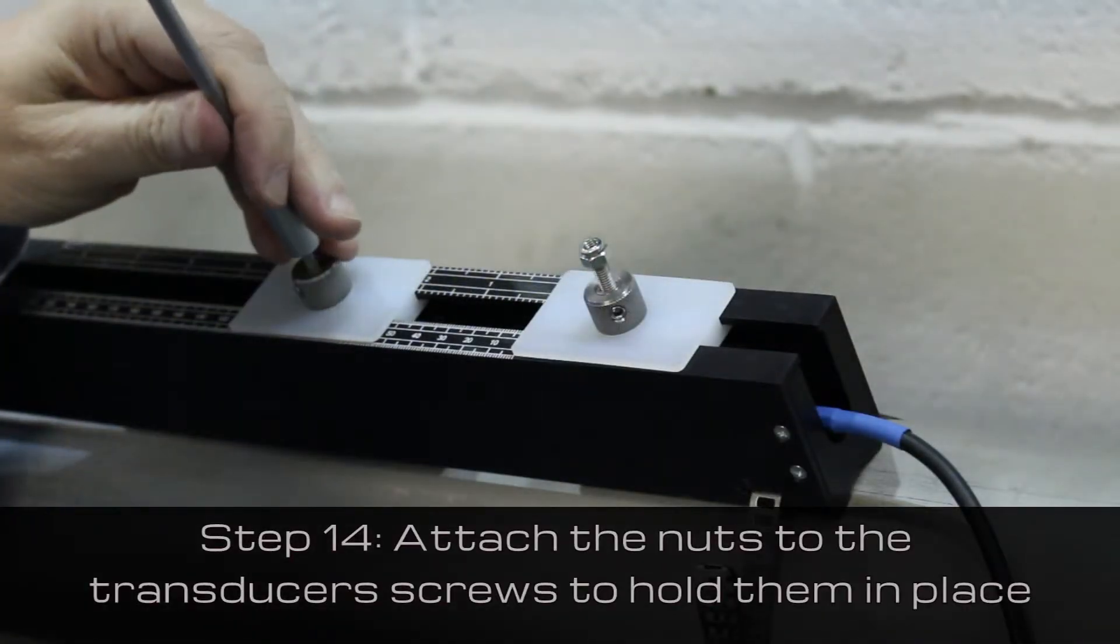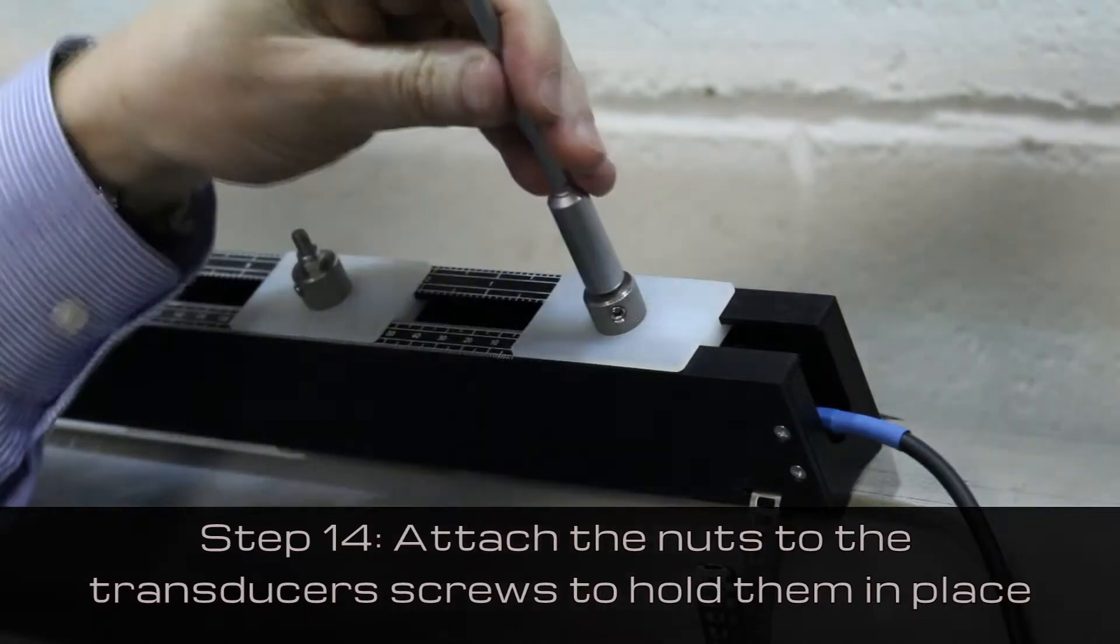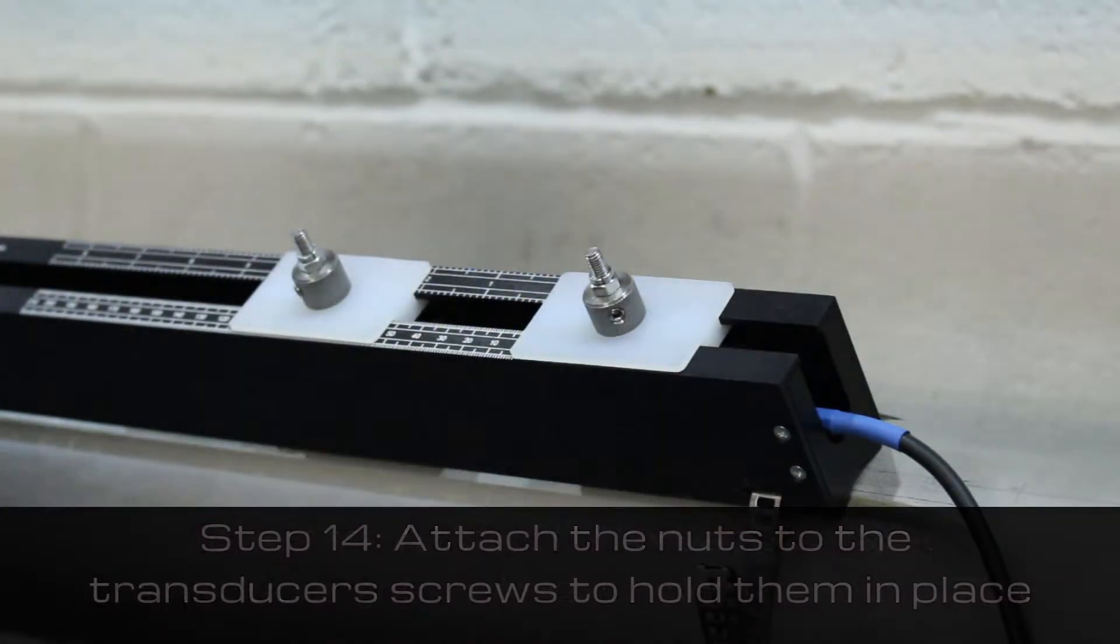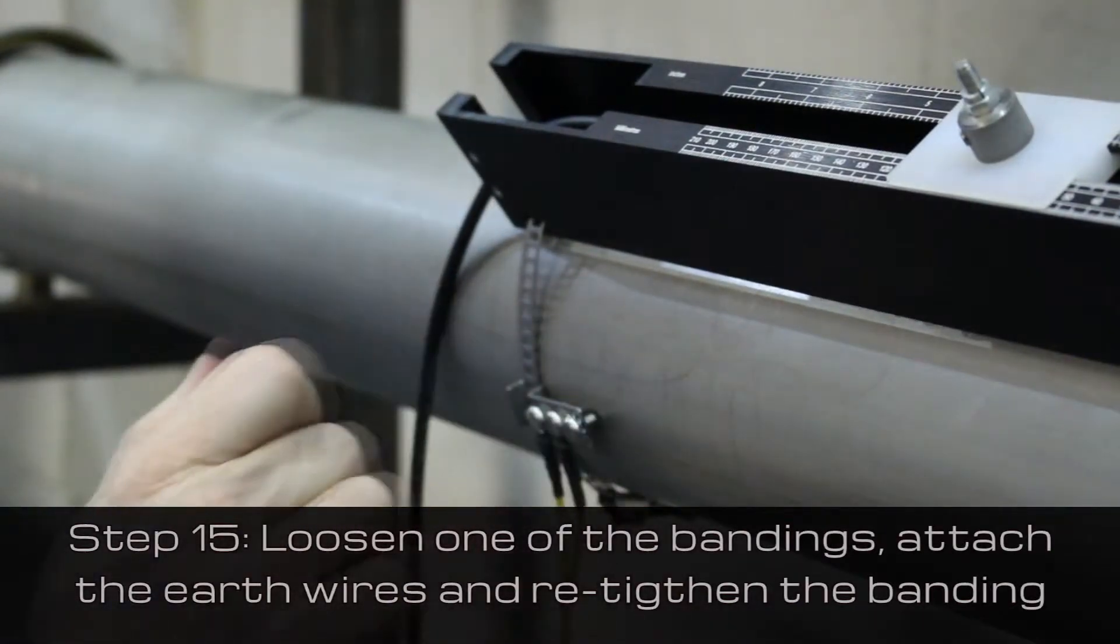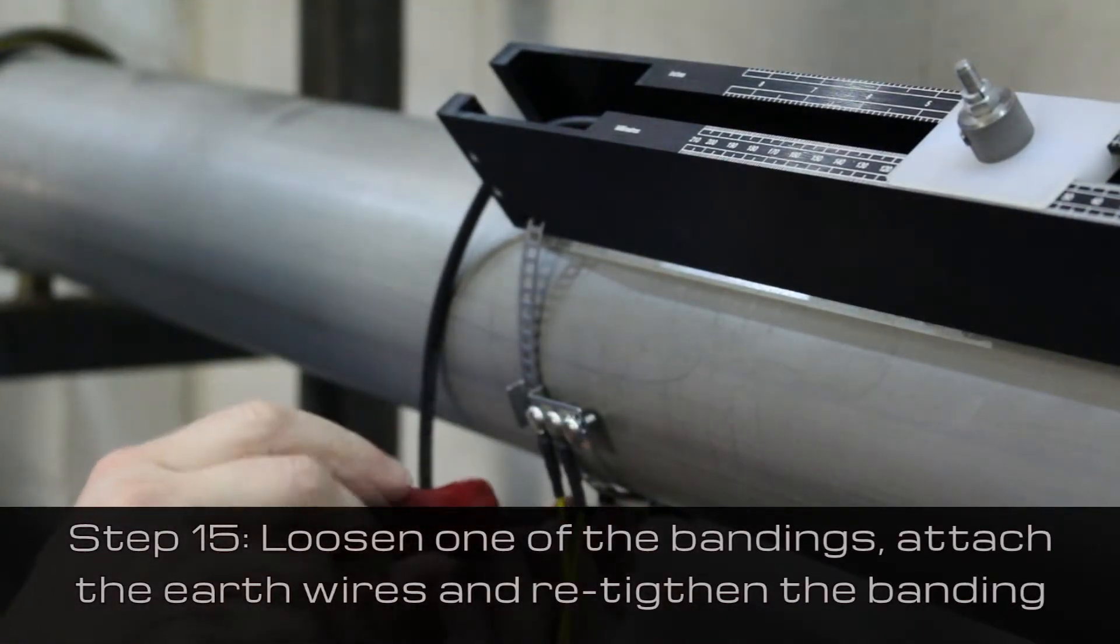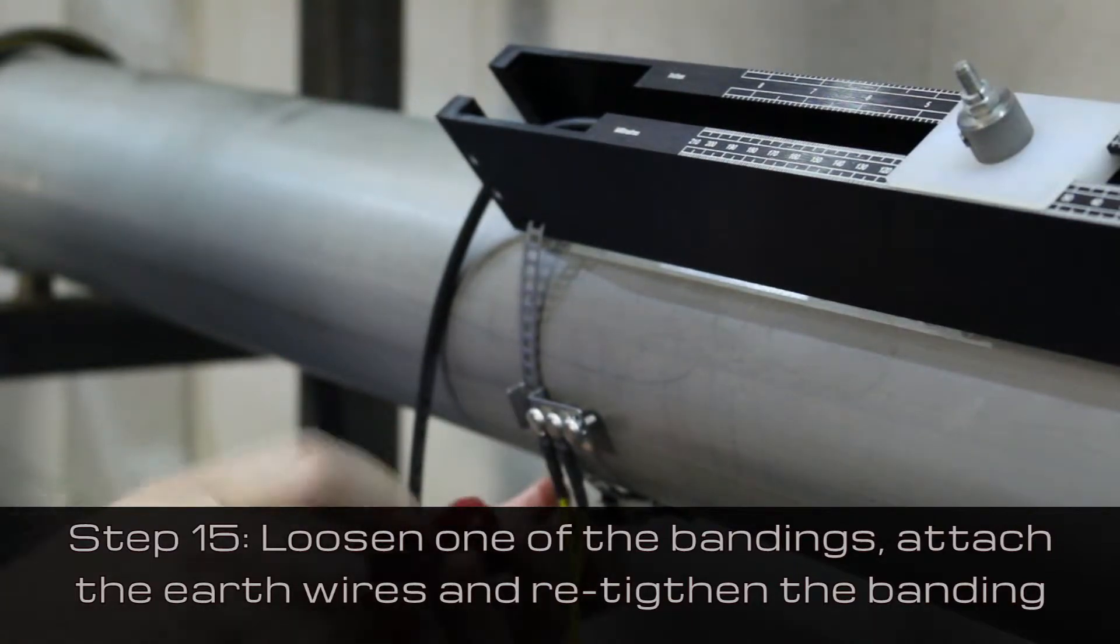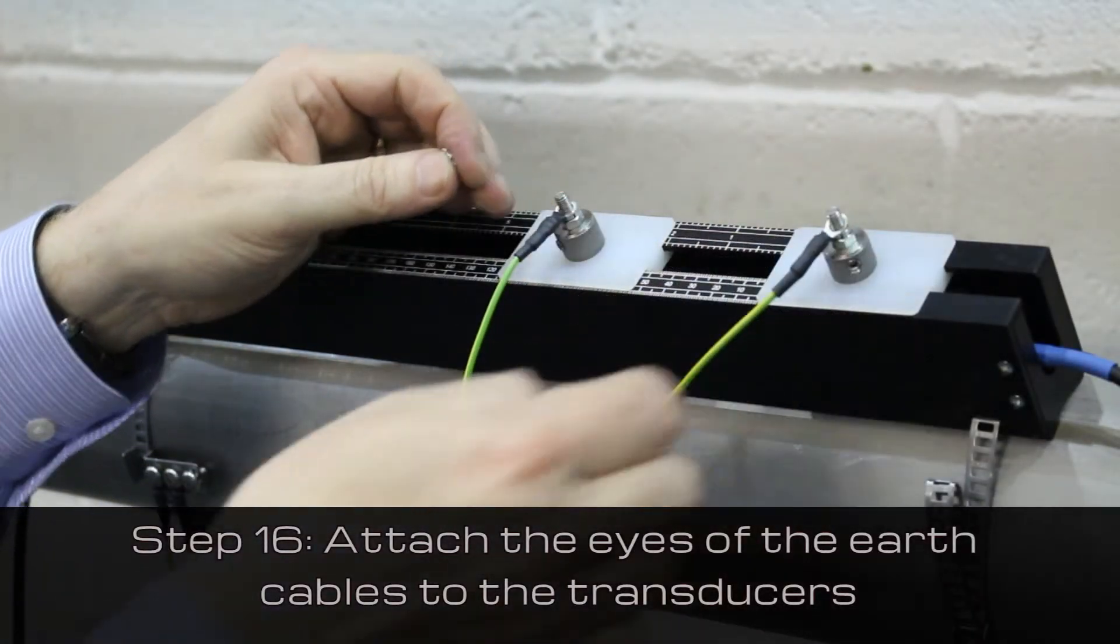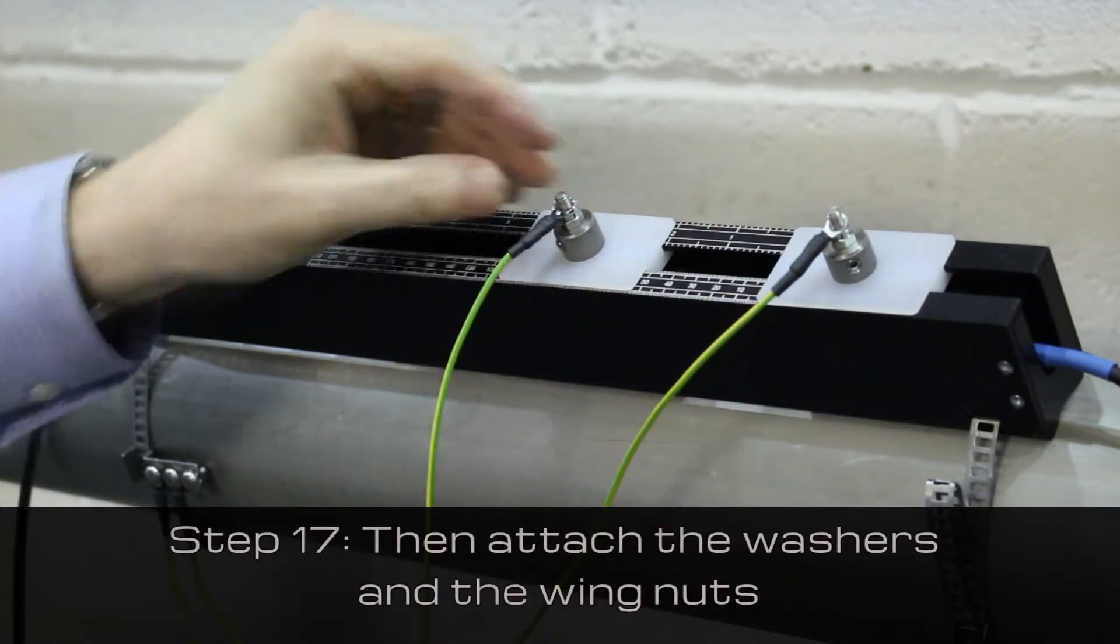Attach the nuts to the transducer's screws to hold them in place. Loosen one of the bandings, attach the earth wires and re-tighten the banding. Attach the eyes of the earth cables to the transducers, followed by the washers and the wing nuts.